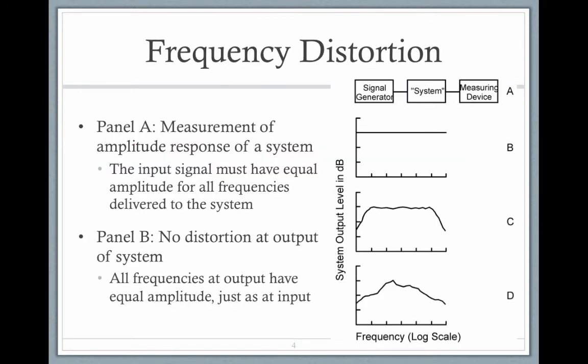If you look at this figure on the right, at the very top A, we have a signal generator, say my voice, sent into a system, a microphone to speakers out into the audience, and then a measuring device where we can compare the output. We're looking at the signal that I send through the microphone system and measuring it in the back of the room.